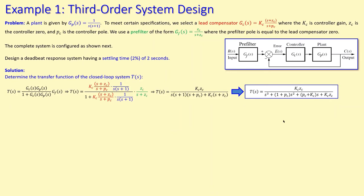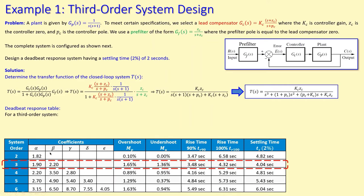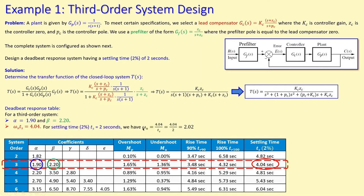For the third-order system, the deadbeat table gives α = 1.9 and β = 2.2. The normalized settling time criterion is ωn × Ts = 4.04. For a required settling time of 2 seconds, ωn = 4.04 / 2 = 2.02 radians per second, which will be used in the subsequent analysis.